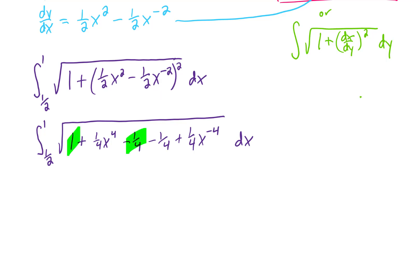So one thing we can do is notice that we have some like terms here. I'm going to copy the 1/4 x to the fourth first. Notice that 1 minus 1/4 minus 1/4 is just plus 1/2. And we have a plus 1/4 x to the negative 4th.